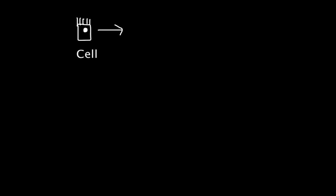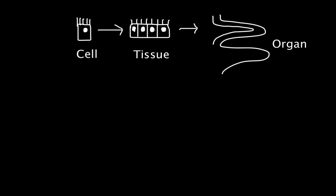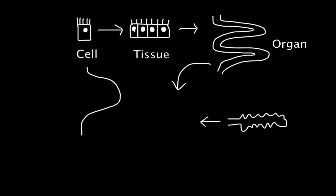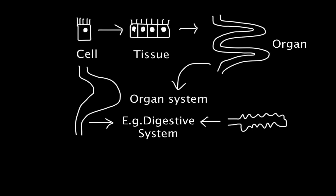To elaborate on this, single cells come together to form tissues. Many different tissues come together to form an organ. And if you put different organs together, they'll form an organ system. For example, if you put the small intestine together with the pancreas, the stomach, and several other organs as well, you'll form the digestive system.